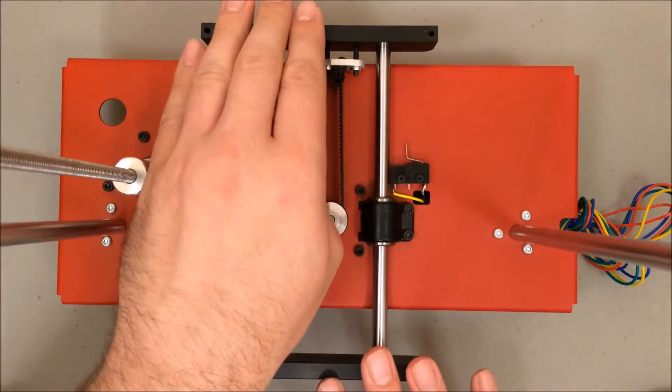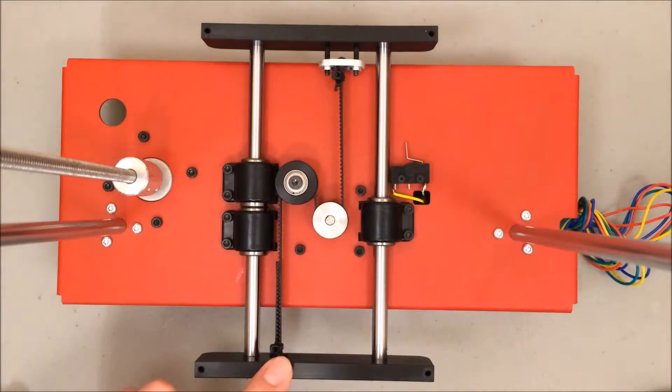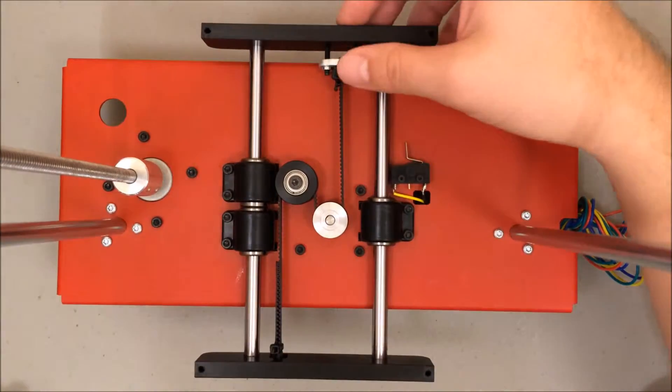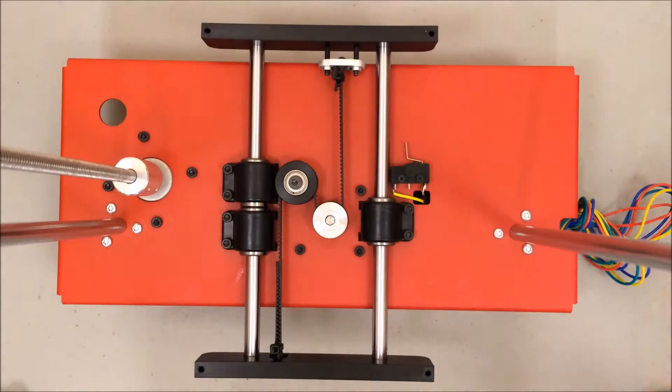The belt is held on to the two rod ends using this tensioner and just a zip tie on this end. The tensioner lets us tighten the belt by tightening the screws on the outside edge.